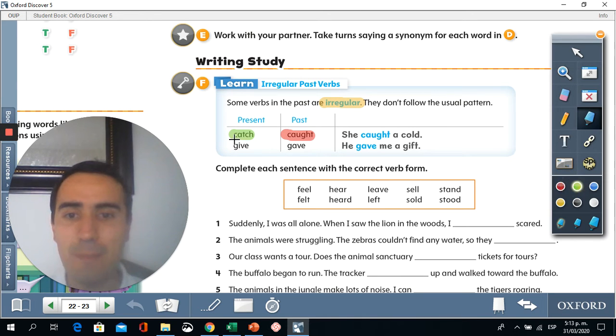Now, the same thing happens with the verb give. For the past tense of give, we have gave. He gave me a gift.